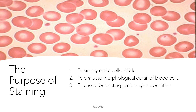By differentiating the different blood cells, we are able to see which blood cell dominates the blood picture. And this can give us information on possible pathological conditions that the patient may have. For example, if we notice the predominance of neutrophils, we might be able to say that the patient is having a bacterial infection.